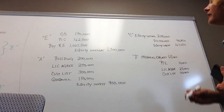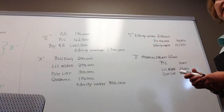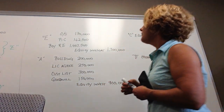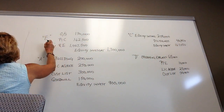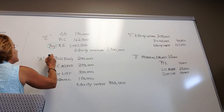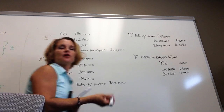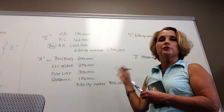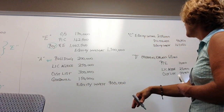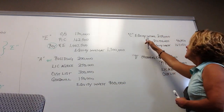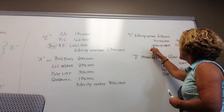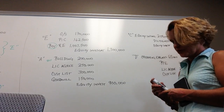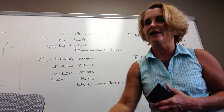Those are the four consolidating entries. The E and A entries carry forward from Chapter 2 — though we factor in beginning-of-year retained earnings. The C and D entries are new: eliminating equity income, eliminating dividends paid with the offset to the equity investment, and recording depreciation on all acquisition accounting premium assets.